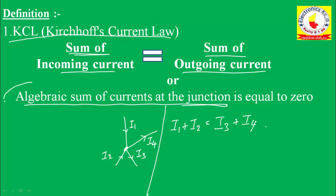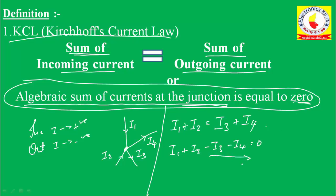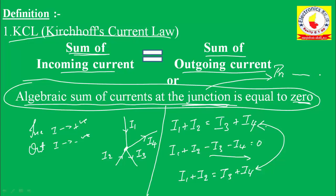The second definition of KCL states that the algebraic sum of currents at a node or junction is equal to zero. Taking incoming currents as positive and outgoing as negative: I1 + I2 − I3 − I4 = 0, which gives I1 + I2 = I3 + I4. Both definitions are equivalent. KCL is applicable at principal nodes — this is very important.